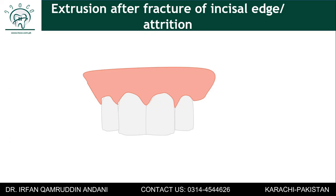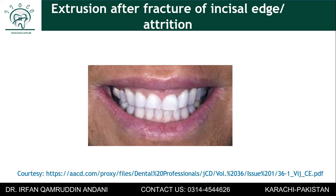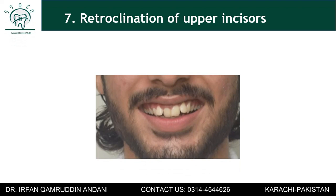A third reason for disturbed width-to-length ratio is extrusion of the incisor after fracture or attrition of the incisal edge. When the incisal edge is fractured, the tooth may erupt excessively, and as the tooth moves, the alveolar bone and gums move with it. You can find excessive visibility of gums on that particular tooth — as seen in this patient with severe attrition who has developed gummy smile due to excessive eruption of the central incisors. Also, never miss retroclination of upper incisors, as in Class II Division 2 cases, which causes localized excessive gum visibility.